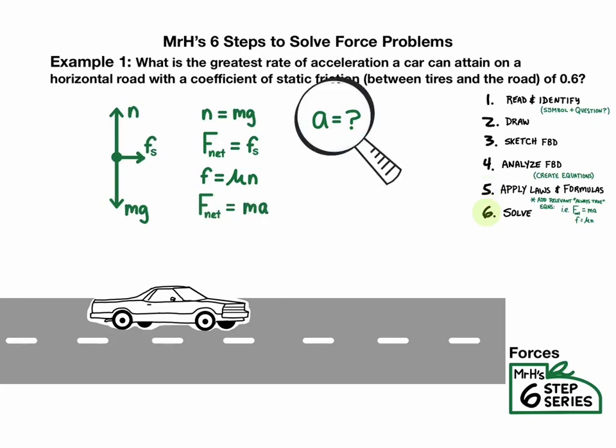Step six is to solve for the unknown. In this case, we're going to look for an equation that has acceleration in it. There it is, Newton's second law. We'll start with you. F equals ma. We can just rewrite this equation for a. And then we get a equals F net divided by mass. Now if we had both of those terms, then we'd be all set, but we don't. So we're going to have to substitute.